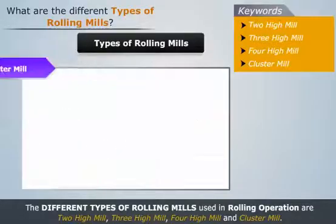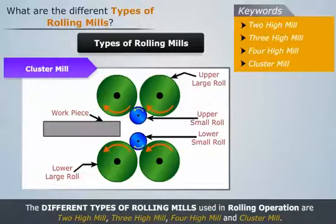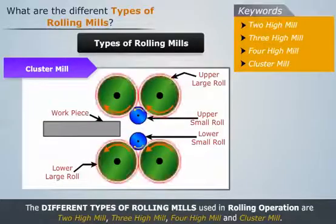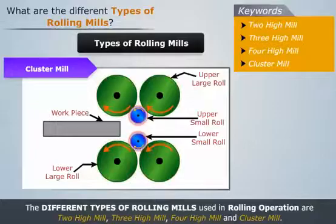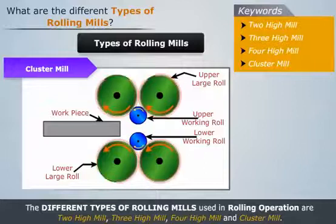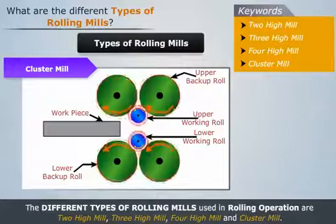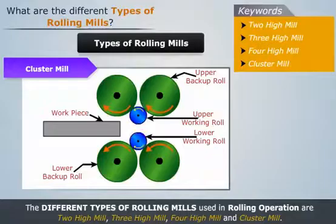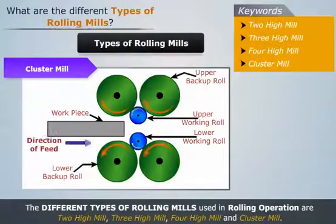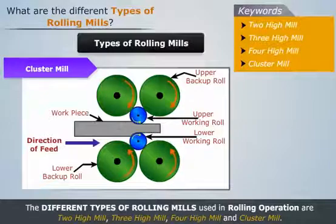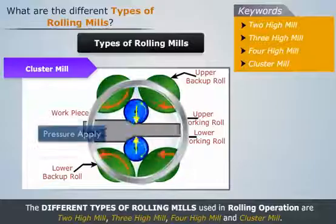Finally, let us study about the cluster mill. A cluster mill consists of two small diameter rolls and four or more large diameter rolls. The smaller rolls act as the main working rolls and are supported by the larger rolls, which act as backup rolls and prevent the smaller rolls from deflecting. Similar to the 4 high mill, the small diameter rolls rotate with the help of the large diameter rolls and thus apply pressure on the metal work piece.